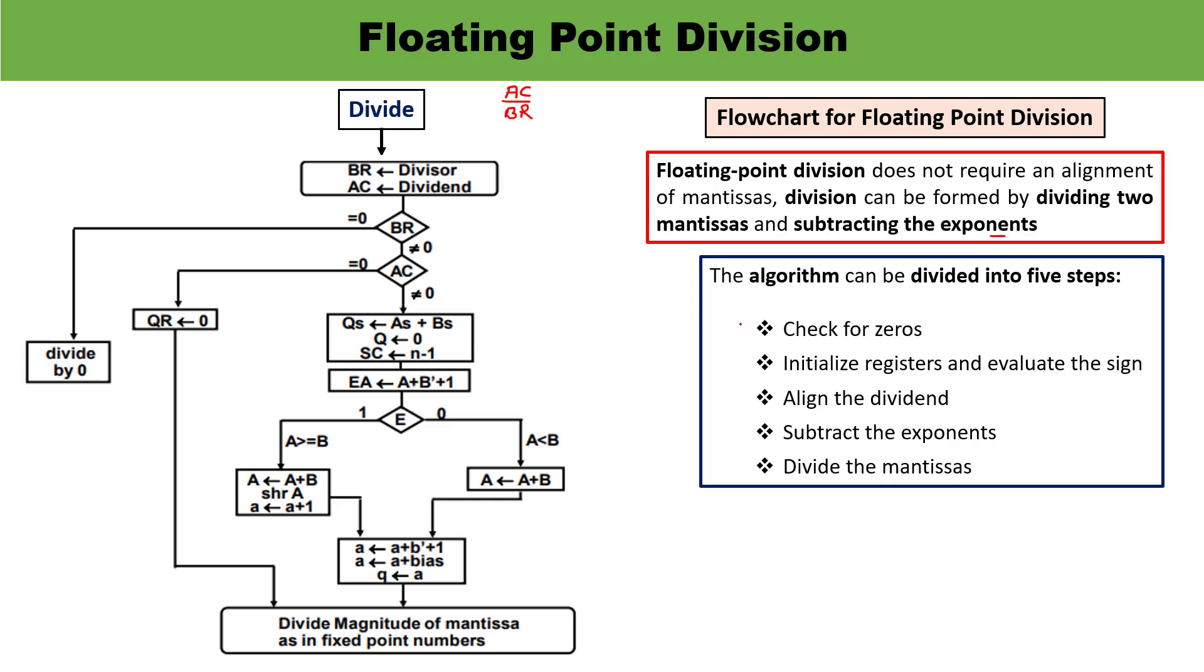So first condition is check for zeros. Check for zeros means what happened if BR, which is the denominator, if this is zero. If divisor is zero, it indicates the attempt to divide by zero, which is an illegal operation. Something upon zero is infinite. So divide by zero is an illegal operation and the operation will terminate with an error message.